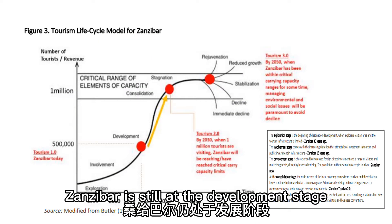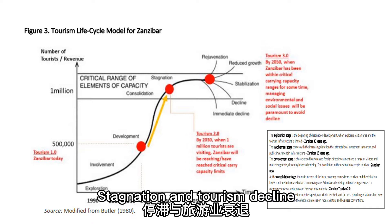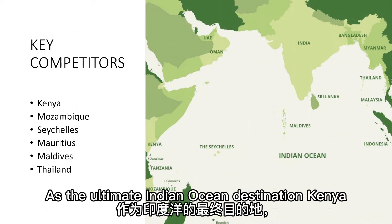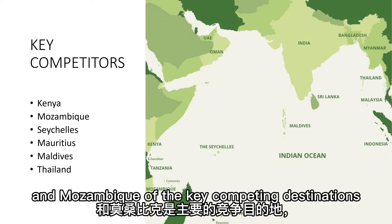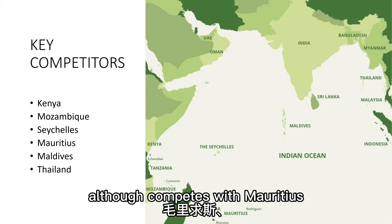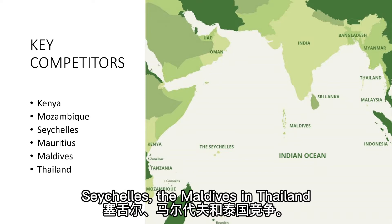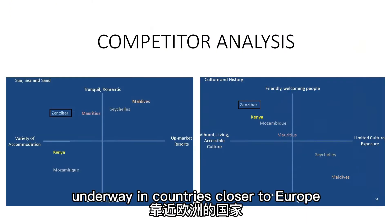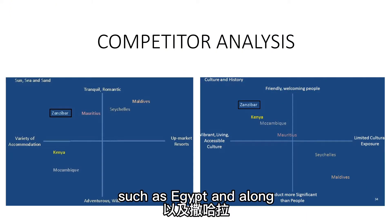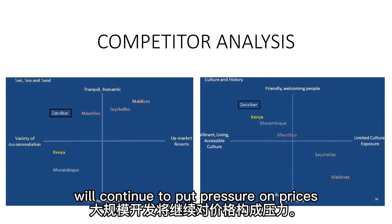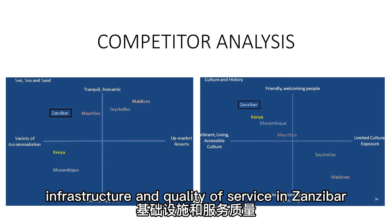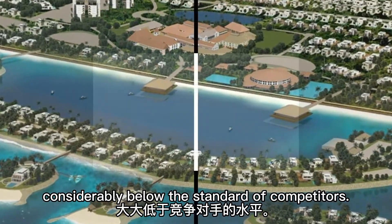Zanzibar is still at the development stage, but it is preparing for future stagnation and tourism decline. As the ultimate Indian Ocean destination, Kenya, South Africa, and Mozambique are the key competing destinations, although it also competes with Mauritius, Seychelles, the Maldives, and Thailand. Demand for beach tourism is likely to grow, but massive development underway in countries closer to Europe such as Egypt and along sub-Saharan African coasts will continue to put pressure on prices. Accommodation, infrastructure, and quality of service in Zanzibar are considerably below the standard of competitors.